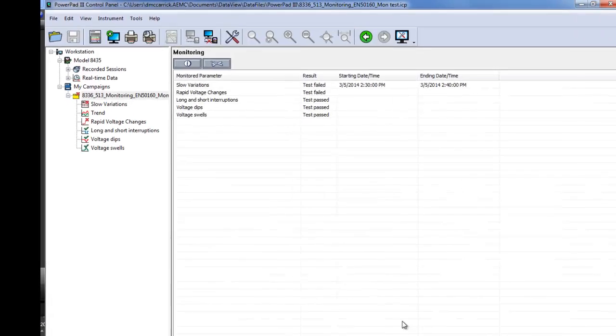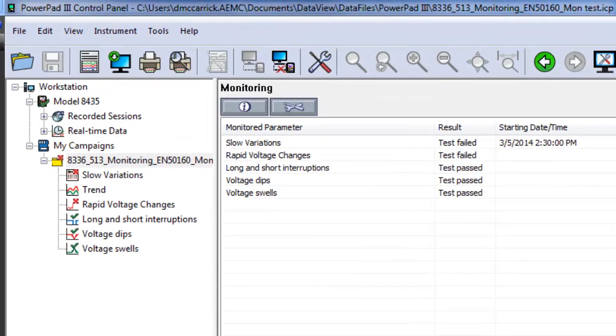The results of the session now appear under My Campaigns in the navigation frame. These results indicate whether or not the monitored system passed EN 50160 specifications for slow variations, rapid voltage changes, long and short interruptions of the supply voltage, supply voltage dips, and supply voltage swells.